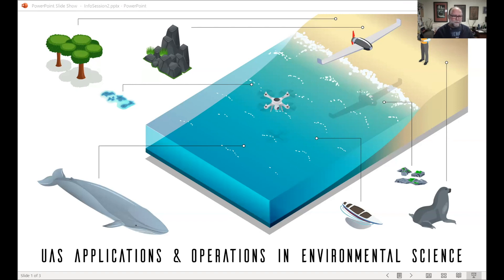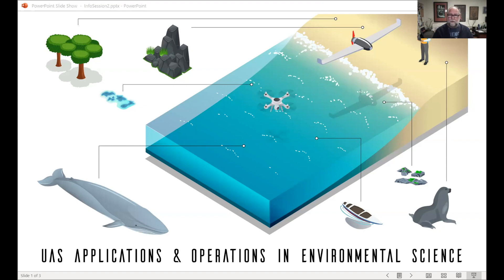This cartoon is a deconstructed view of someone using a drone to study something in a coastal environment. Our drone pilot might be flying a multi-copter — that little drone there looks like a Phantom. Maybe we're interested in what's happening in the water, an animal or a boat, or maybe the physical habitat components like rocks or oysters. We're trying to get learners to think about how to collect robust scientific data to answer the question they have.